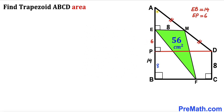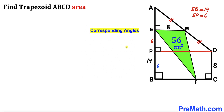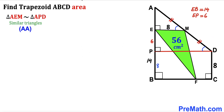Now let's focus on two triangles: the smaller right triangle AEM and the bigger right triangle APD. We observe that angle EMA and angle PDA are corresponding angles and are congruent. Therefore, right triangle AEM is similar to right triangle APD by the Angle-Angle similarity theorem. Since AM equals MD, let's call each segment x, making the whole side AD equal to 2x.